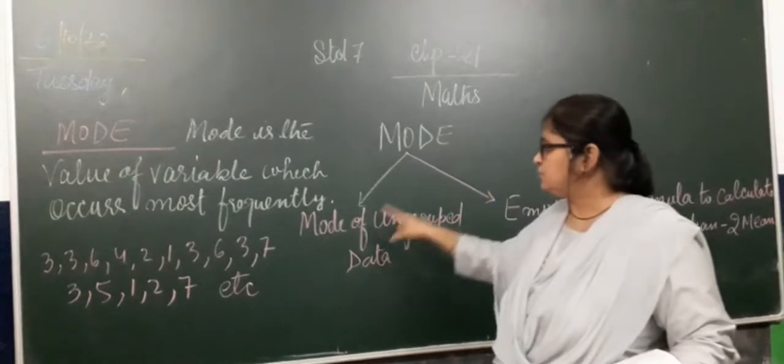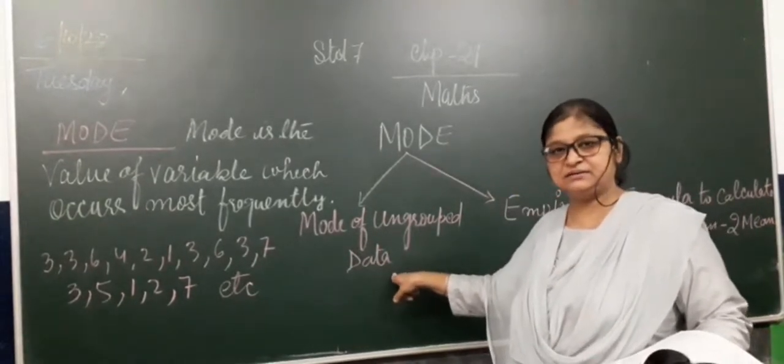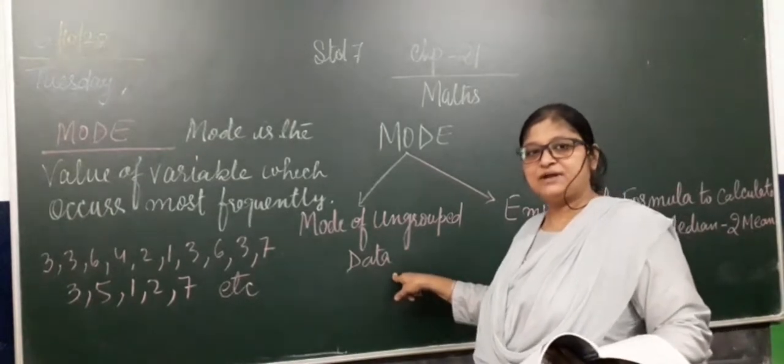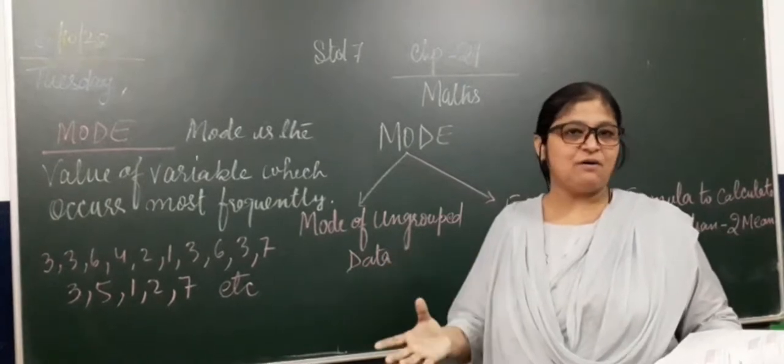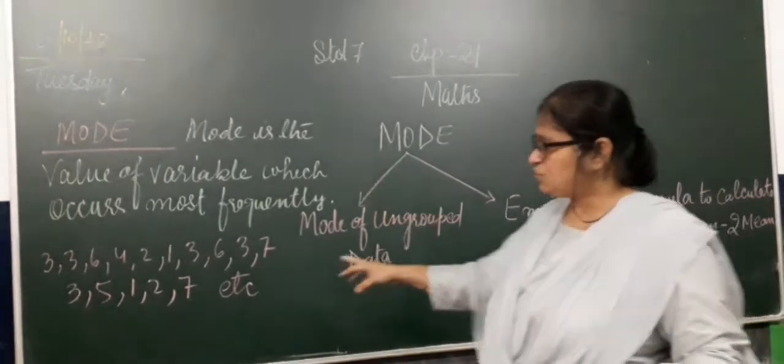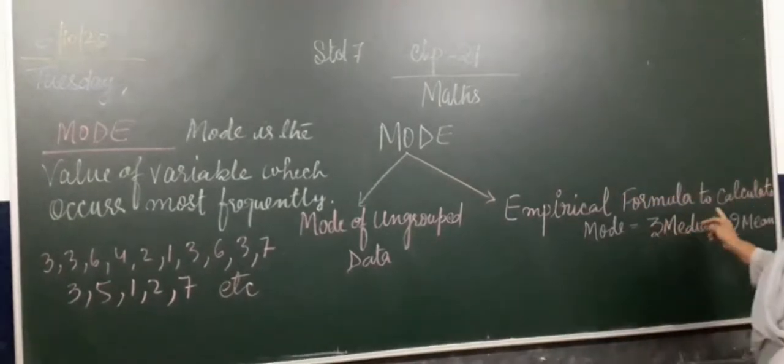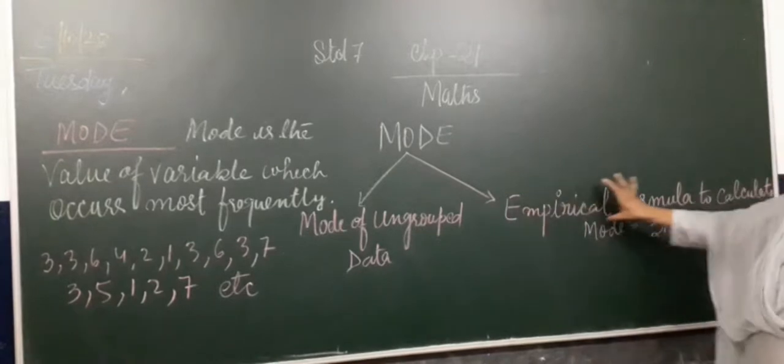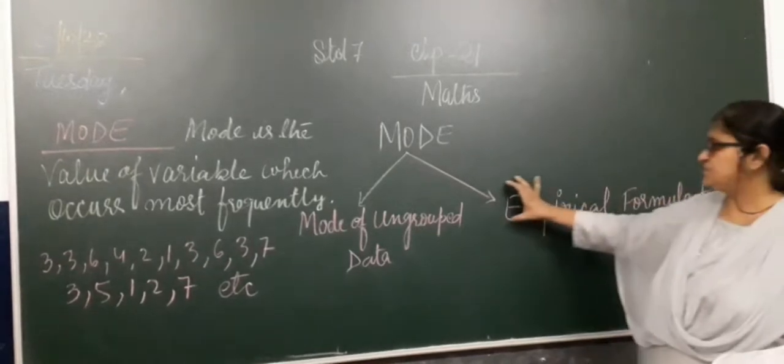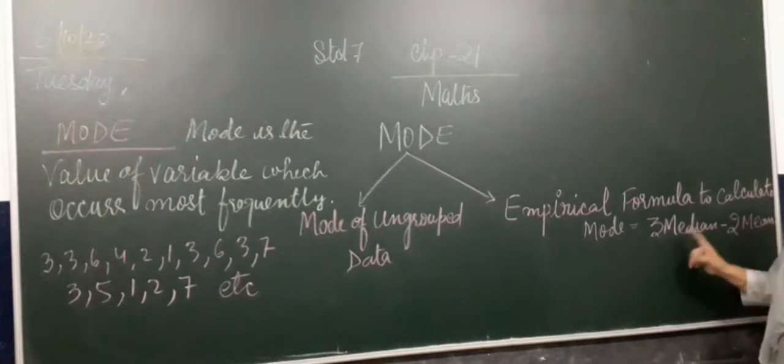Mode calculate. One is ungrouped data. Ungrouped data is not in the group. Second is empirical method to calculate mode using empirical formula. This particular condition uses this formula.